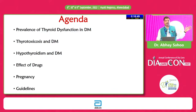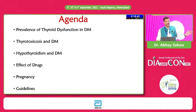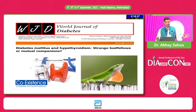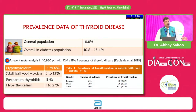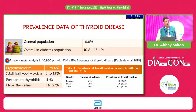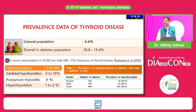Diabetes and hypothyroidism are strong companions — they coexist frequently. In the general population, thyroid disorders occur at 6.6%, whereas among diabetic patients it ranges from 10.8 to 13.4%. A meta-analysis of close to 11,000 patients found 11% frequency of thyroid disorders. Hypothyroidism is 3 to 6%, subclinical hypothyroidism 5 to 13%, and postpartum thyroiditis is in a much higher range.